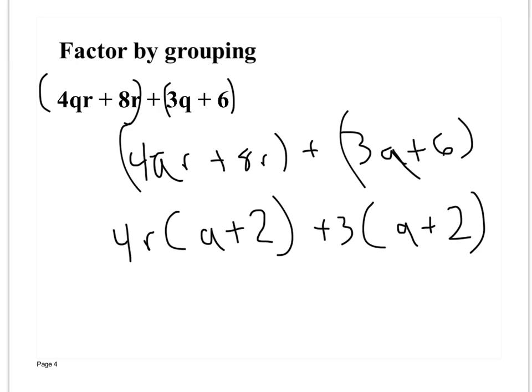If you look, you have q plus 2 and you have q plus 2. So what we do is we combine that and just write it once. And then what we do is we combine what's in front. 4r plus 3. And there's your answer.